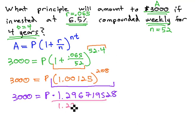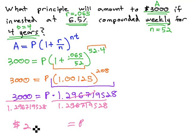And so to get P alone, we'll divide by 1.296719528 on both sides, because that's going to tell us what P equals. 3,000 divided by 1.296719528 is going to be $2,313.